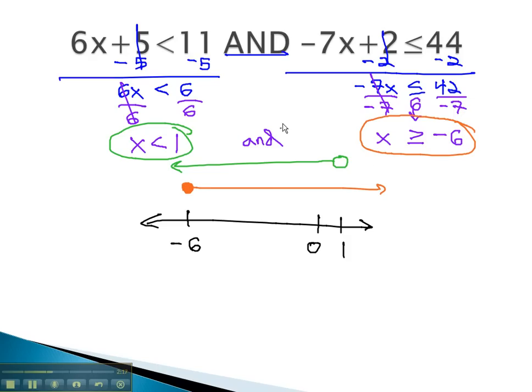When we use the operator AND, we want both to be true, meaning we want these graphs to overlap. We notice they overlap in the middle, at negative 6 with the closed dot and 1 with an open dot, and everything in the middle. This means any value between these will make both inequalities true.